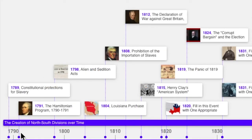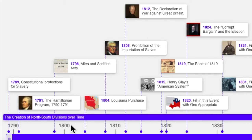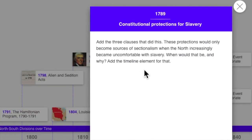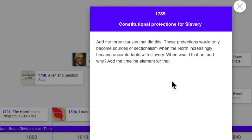First we see the dates and the events listed beside each date. If we click on each of these items, we can see what they represent. In 1789, there were constitutional protections for slavery described here. I don't identify the actual protections, but I point out that by protecting slavery, the Constitution created North-South tensions when the North decided that it didn't like slavery. It became dissatisfied with the protections in the Constitution.